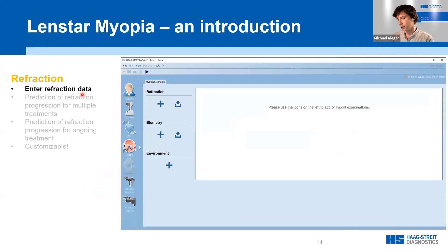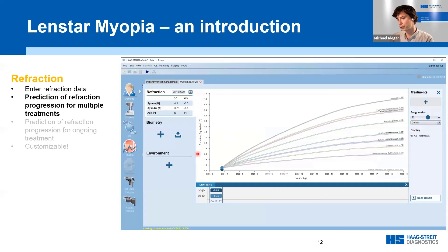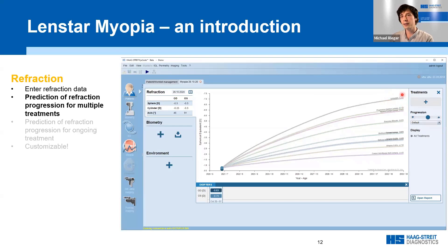In the refraction section, data are entered. You can specify the measurement method — whether it was cycloplegic or not — and enter the sphere, cylinder, and axis. Once data is added, you get a graph with spherical equivalent on the y-axis and patient age on the x-axis. For example, a patient almost seven years old already at minus 0.5 diopters. The software provides a prediction curve showing how the spherical equivalent would change over time until adulthood — untreated, this would result in minus 7.1 diopters.